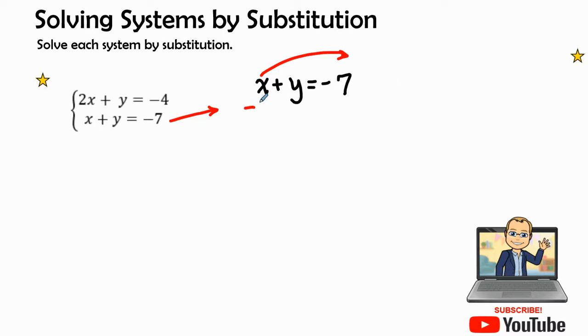So now I have y equals a negative x minus 7. Remember, x minus x cancels each other out or creates a zero. And I know that this expression of negative x minus 7 is going to be plugged into now our first, our top equation.